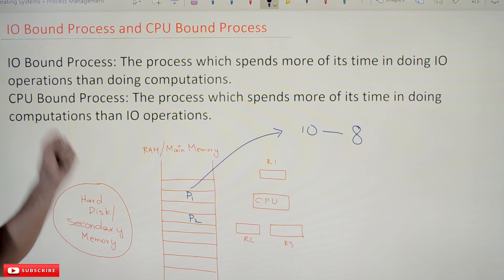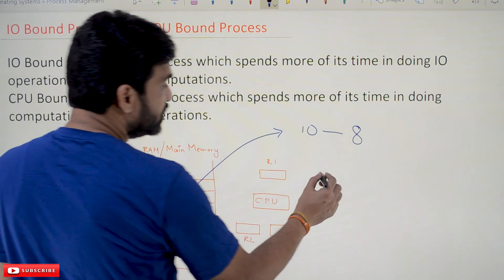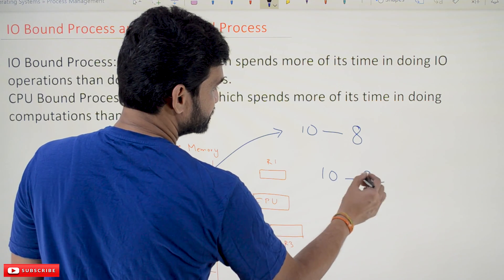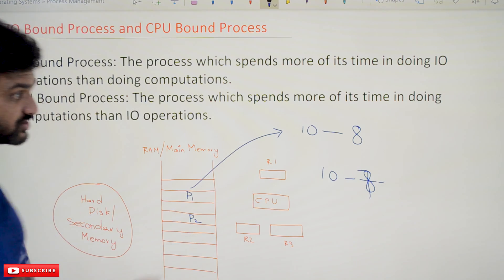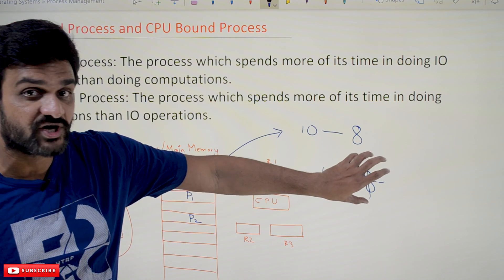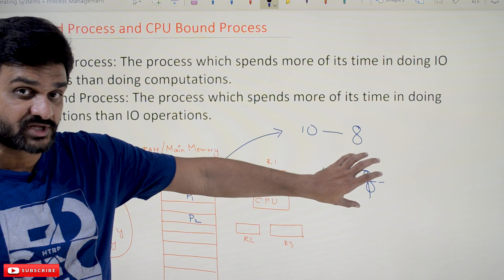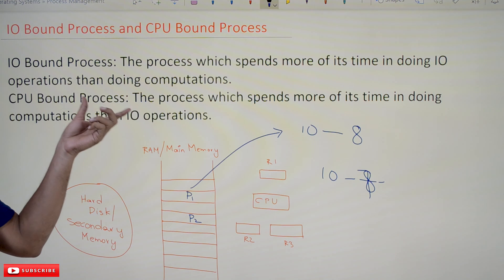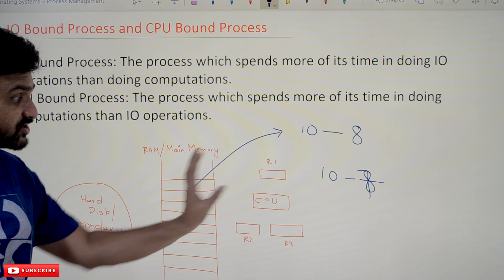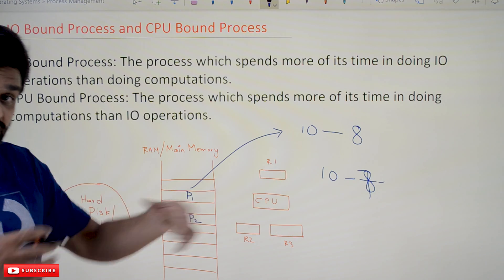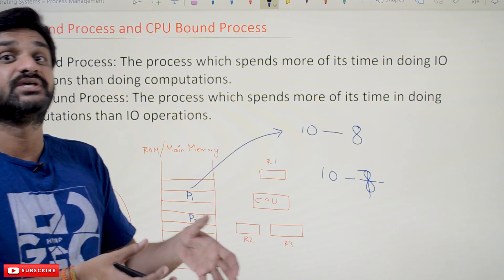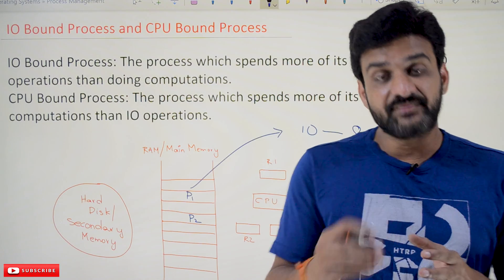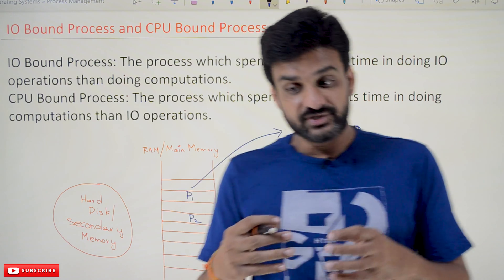The other kind is the CPU-bound process. For example, if process P2 has 10 instructions and 7 of those instructions are based upon computations, then that process is called a CPU-bound process. It means most of the instructions are bound to the CPU — most instructions will get executed on the CPU — and that is what we call a CPU-bound process.